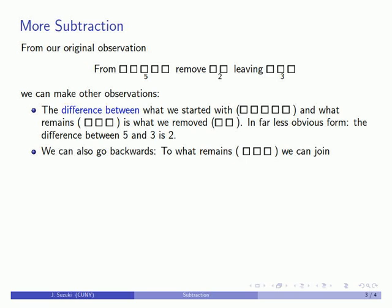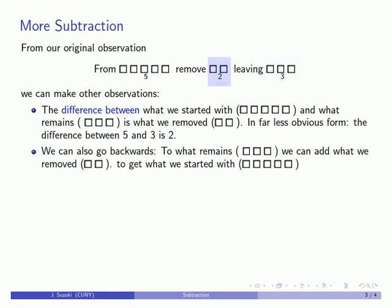Another useful thing to do in mathematics is to go backwards. We end up with this collection of cardinality 3. We can add what was removed to get what we started with.